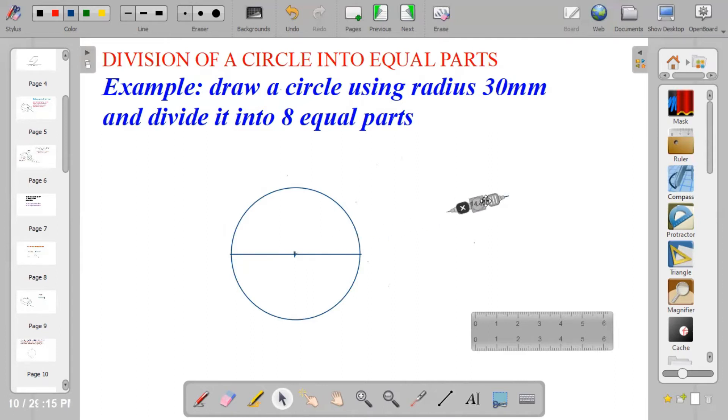After you have drawn the circle, there are two points on the circumference of the circle, points 1 and point 2. Center at the first point, and using a radius that is more than the radius of the given circle, strike an arc above and below.